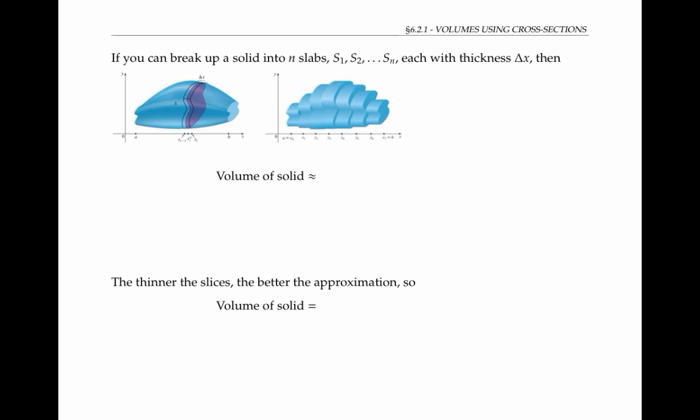We'll assume we've sliced in such a way that each slice is the same thickness, we'll call that thickness Δx. Well, the volume of the solid is just the sum of the volumes of the slices. In sigma notation, we can write this as the sum from i equals 1 to n, the number of slabs, volume of S sub i, the ith slab.